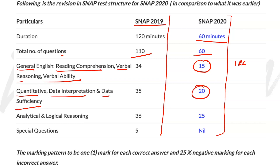After that, for Quantitative, Data Interpretation and Data Sufficiency, there are only 20 questions total. So the weightage for quants would be around 10–15 marks. Once I get the authenticated blueprint of exactly how many questions are in each section, I will definitely share that with you — please subscribe for that video. Under Analytical and Logical Reasoning, you had 36 questions earlier, now it's just 25.